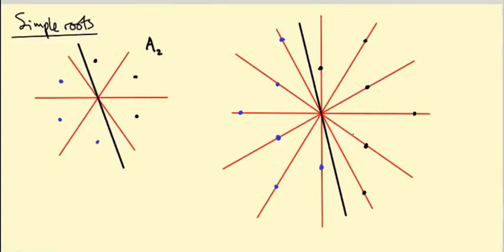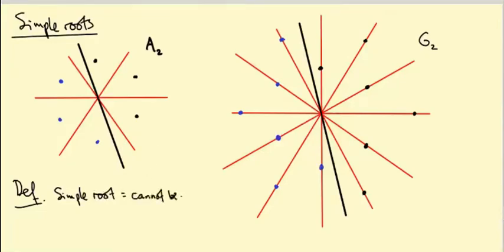This one is for the G2 root system. Now a positive root is called simple if it can't be written as a sum of two positive roots. Let's just have a look at these examples. This root in the A2 root system can be written as a sum: